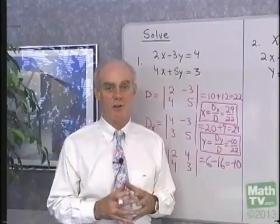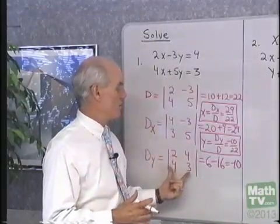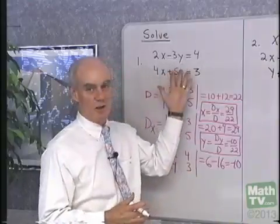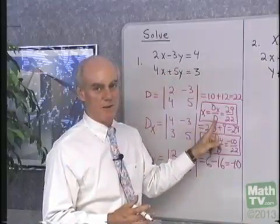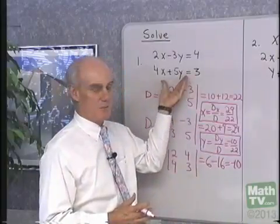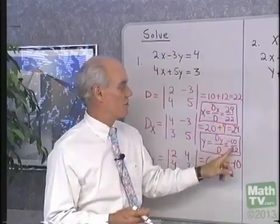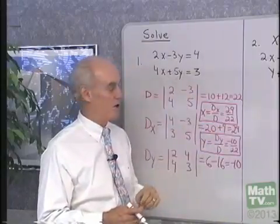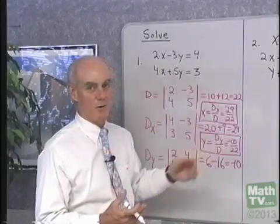This process lends itself well to calculators or computers. You simply form these 2 by 2 determinants. The value of x that solves the system will always be D sub x divided by D. The value of y will always be D sub y divided by D. This gives you the ordered pair x, y that satisfies the equation, and no matter how you solve this system, you'll get that same ordered pair.